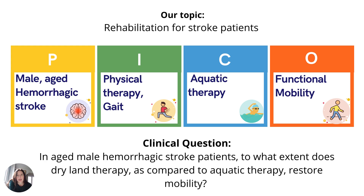So here we've used PICO to get a specific, targeted PICO statement and a clinical question. We started with the broad idea of rehabilitation for stroke patients, then narrowed it down to male, aged, hemorrhagic stroke. We're looking at the intervention of physical therapy, specifically gait therapy. Our comparison is aquatic therapy, and our outcome is functional mobility. A clinical question we could go with is: in aged male hemorrhagic stroke patients, to what extent does dryland therapy, as compared to aquatic therapy, restore mobility? We've got all of our elements represented there.